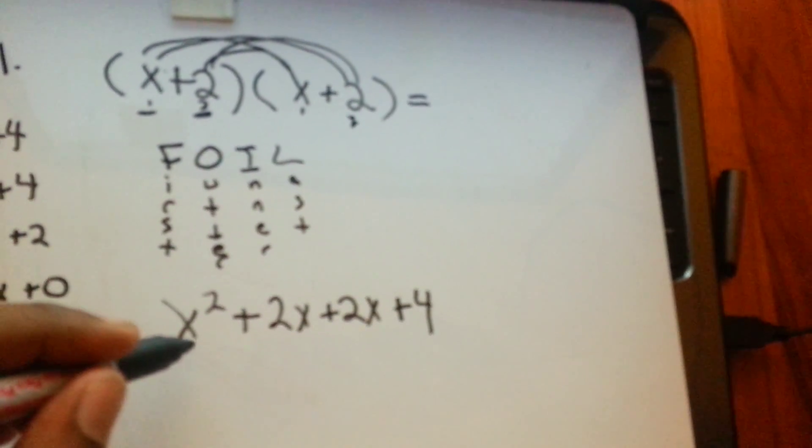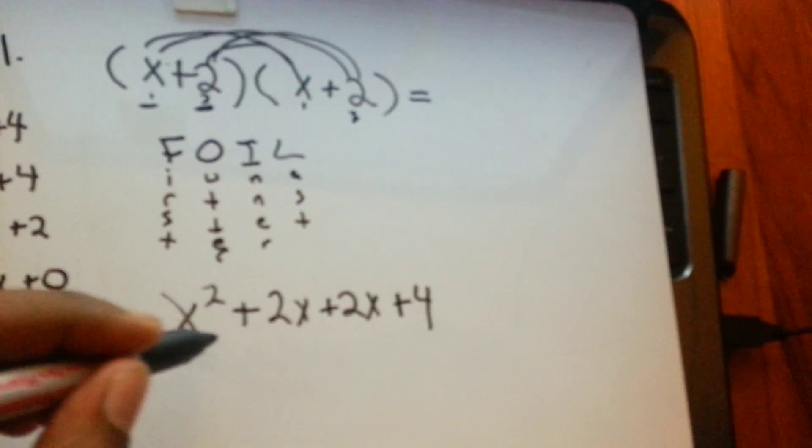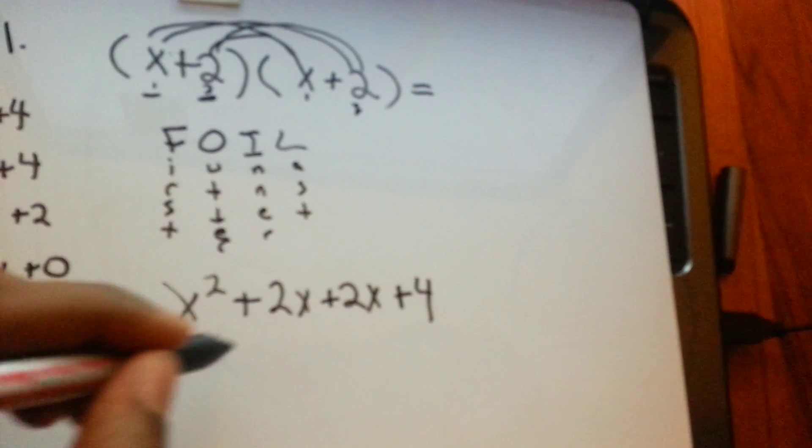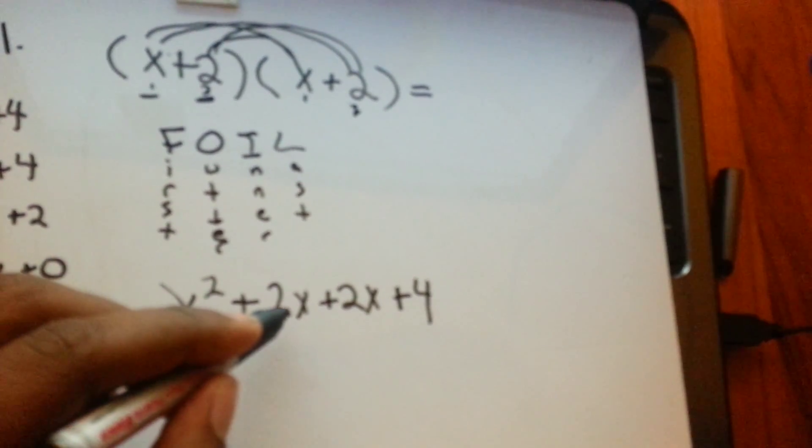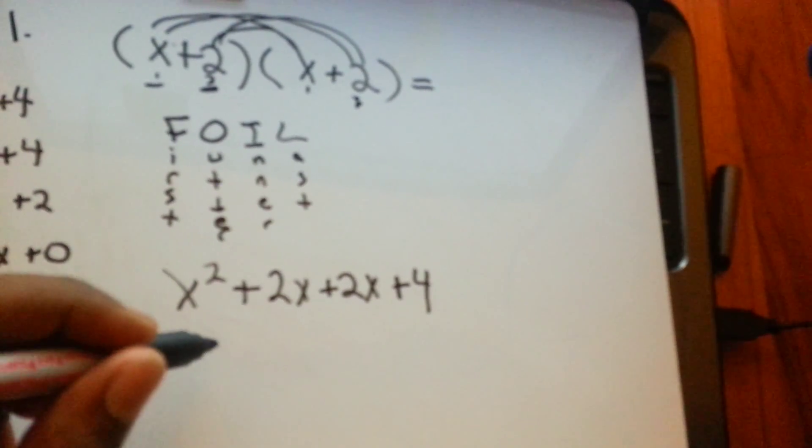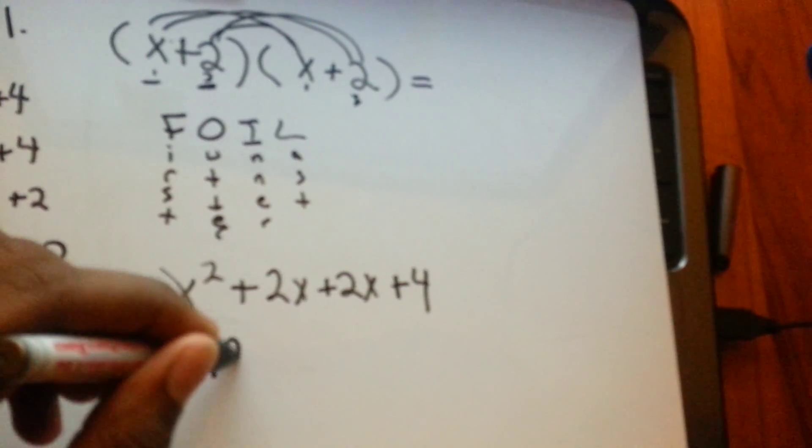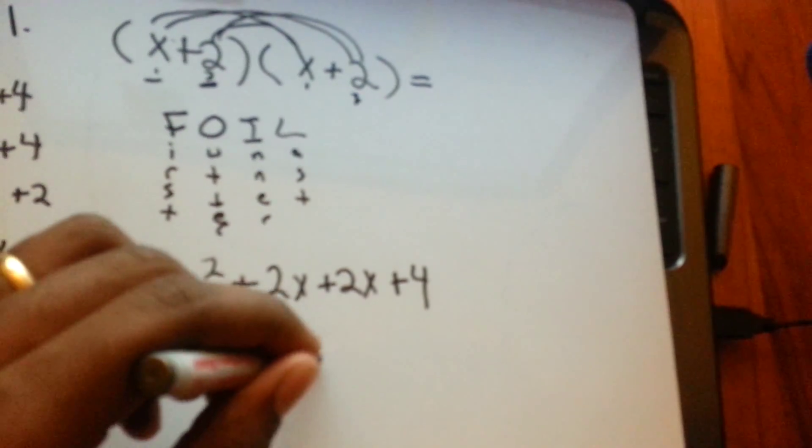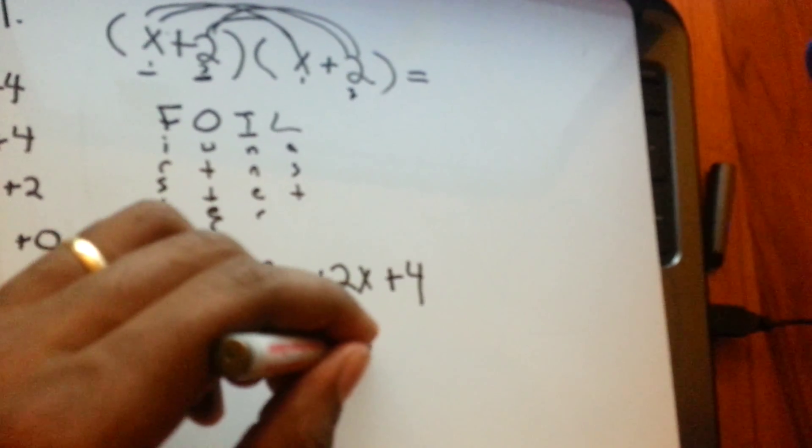And then you simplify these, see if there's any like factors, anything that have the same variables with it. And then you have 2x and 2x. So you can add those together. And it becomes x squared plus 4x plus 4.